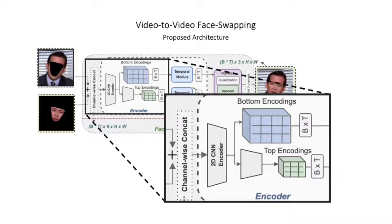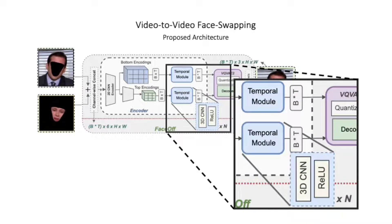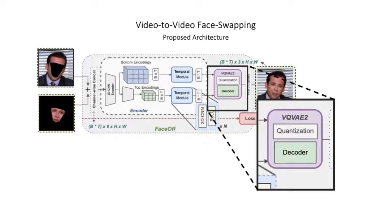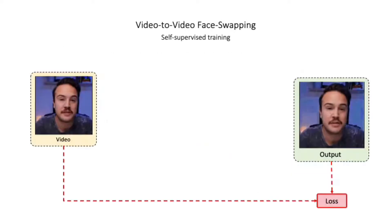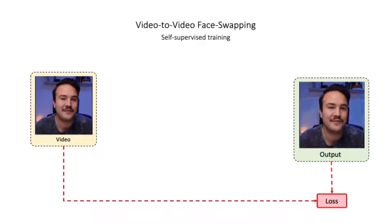Faceoff first concatenates the source foreground and target background channel-wise in each corresponding frame. This results in a single video which is then encoded by our encoder into a top and a bottom hierarchy. Until this point, the encoder operates frame-wise, encoding each frame individually. Next, the frame-wise encoding is passed through temporal modules at each hierarchy. The temporal modules are layers of non-linear 3D convolution operations, which allow the network to develop connections between frames and play an essential role in generating temporally coherent output. We adopt the standard VQVAE2 quantization and decoding block.